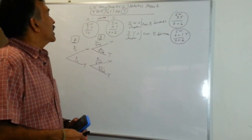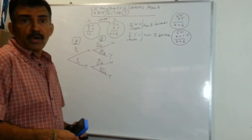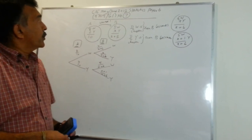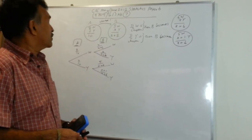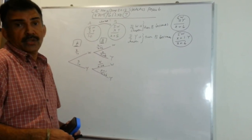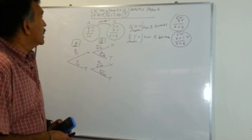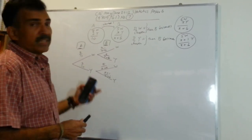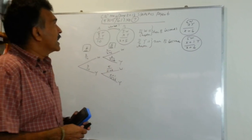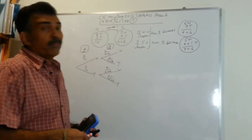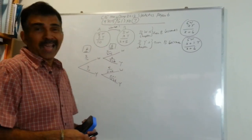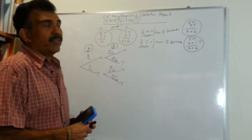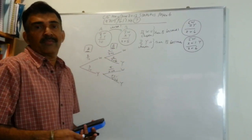In this question, we are given two boxes. In box A, we have eight white balls and two yellow balls, giving us a total of ten balls in box A. In box B, we have five white balls and X yellow balls, giving us a total of X plus five balls.